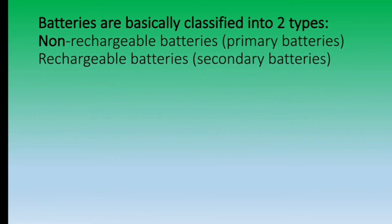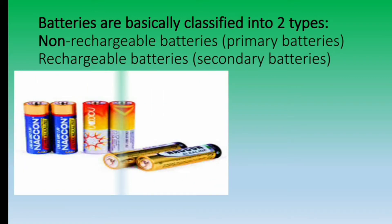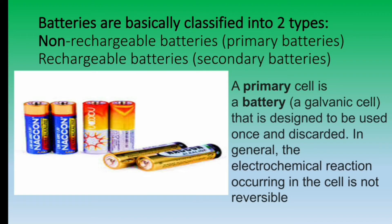Batteries are basically classified into two types: non-rechargeable batteries, that is primary batteries, and rechargeable batteries, that is secondary batteries. A primary cell, also known as a galvanic cell, is designed to be used once and discarded — we cannot reuse it. In general, the electrochemical reaction occurring in the cell is not reversible.